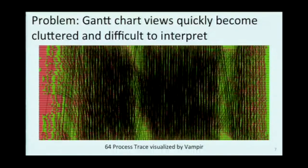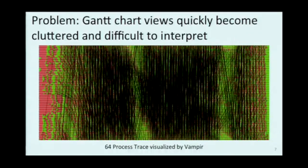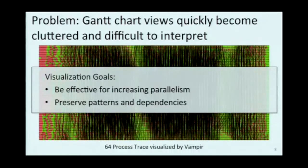There's a problem: though the Gantt chart is pretty intuitive, it doesn't scale very well. Once we take just a moderate number of processes, we get something that's very cluttered. We can drop out those message lines, but then we've lost what those dependencies are, and we probably don't really have a sense of what those bars are either. So the goal here is to create a different visualization that's going to scale a little bit better, while keeping all of this dependency information and preserving the patterns that we see.